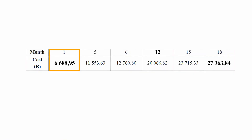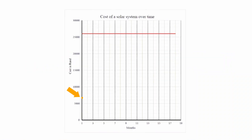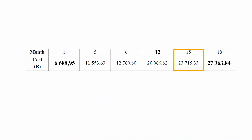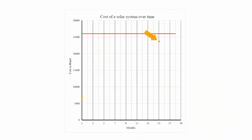The first step is to plot the starting point. In this case the starting point is at month 1, where the cost was calculated to be R6,688.95. So we plot a point at month 1 and R6,688.95. Step 2 is to plot any other point from the table; for this example I choose 15 months at a cost of R23,715.33. Finally, we join and extend the line to form a straight line from the starting point at month 1 to the end point at month 18.